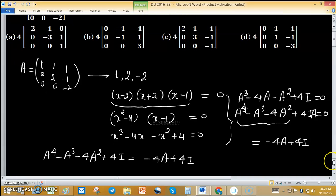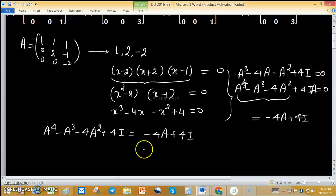What will be the matrix? -4A gives minus 4, 0, 0; 0, minus 8, 0; minus 4, 4, 8. We need to add this matrix: 4I which is 4, 0, 0; 0, 4, 0; 0, 0, 4.